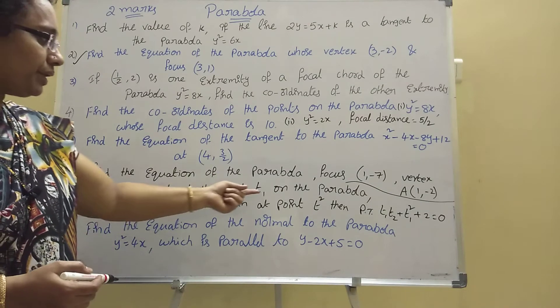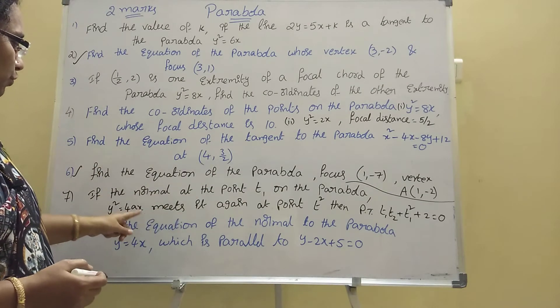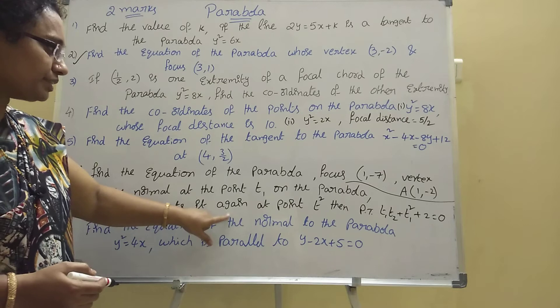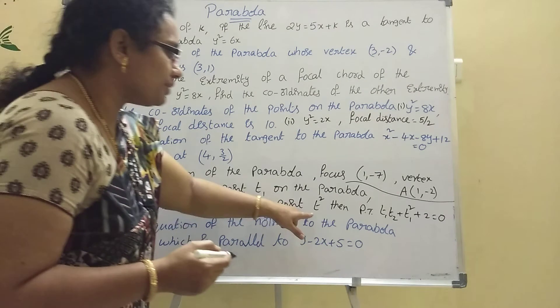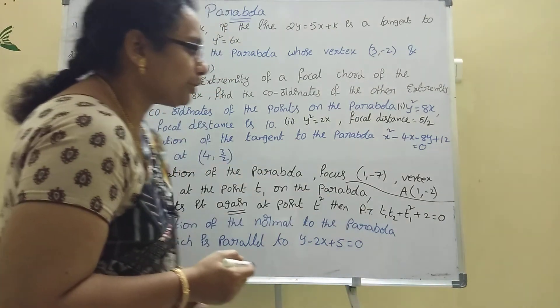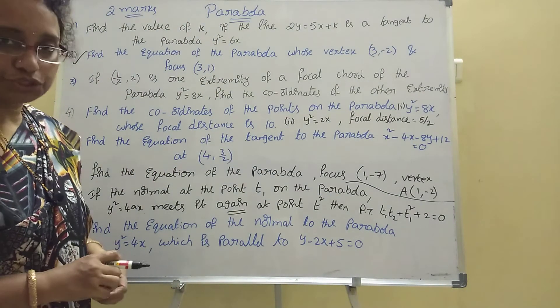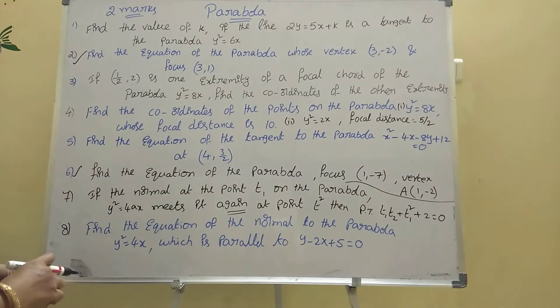Seventh one: if the normal at the point t on the parabola y² = 4x meets it again at the point t₂, then prove that t₁² + t₂² + 2 = 0. That model also.